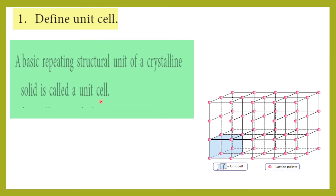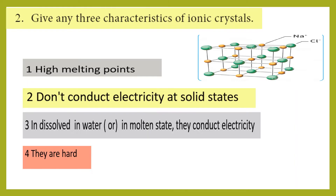Three characteristics of ionic crystals: Ionic crystals, for example sodium chloride (NaCl), have lattice points occupied by positive ions (cations) and negative ions (anions). They have high melting points due to strong electrostatic attraction. They do not conduct electricity in the solid state because ions are not free, but in dissolved or molten state they conduct electricity as free ions are available. They are very hard.